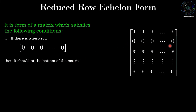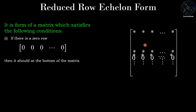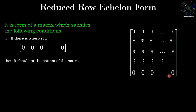So here we have a zero row — it should be at the bottom of the matrix, meaning there is no nonzero row below this zero row. It should be in this form to satisfy the condition.